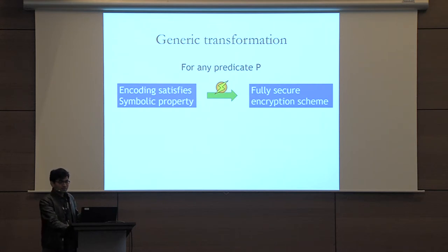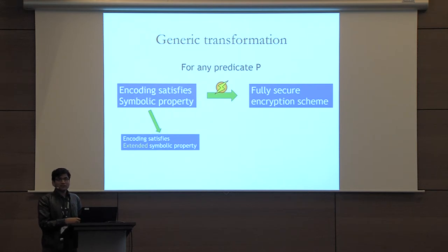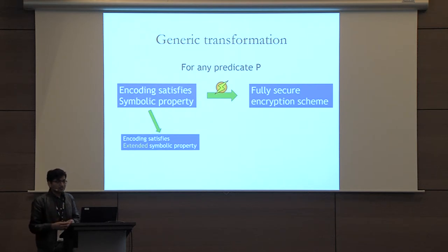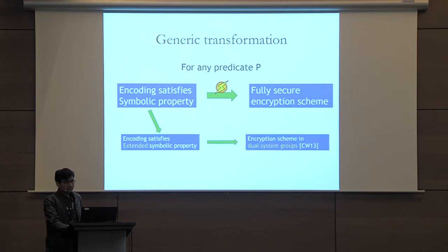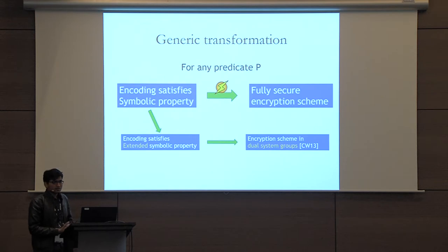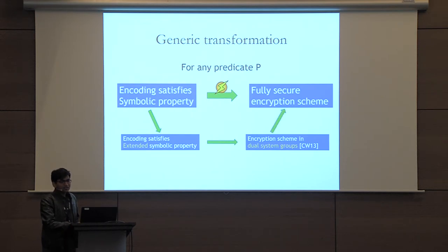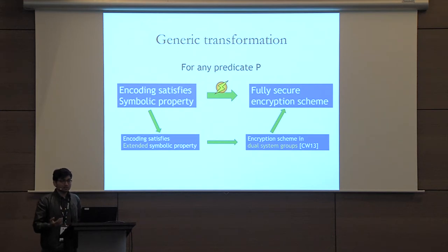This transformation goes through several steps. First, we extend the encoding with some additional variables and polynomials to get a more strict form of symbolic property, which constrains what kind of matrices and vectors you can use. Then we build an encryption scheme in something called dual-system groups, which were introduced by Chen and Wee. Finally, it's already known how to instantiate these groups in prime-order bilinear maps.